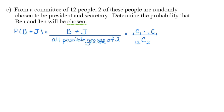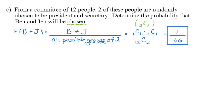Beginning with the denominator: 12 people, choosing 2, so 12 choose 2 equals 66. In the numerator, there is one Ben and we're choosing him, and one Jen and we're choosing her: 1 choose 1 times 1 choose 1, which equals 1. Alternatively, 2 choose 2 is also 1 — there is only one way to choose that group of two people. The probability that Ben and Jen will be chosen is 1 over 66.